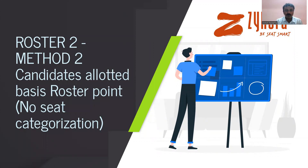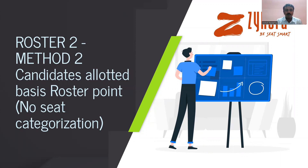In the second part of the video, we looked at one of the methods of implementation based on a roster point allocation, where seats are bucketed into different categories in the seat matrix and then allocation happens from rank one, rank two, on a sequential basis. This is usually followed in MCC. And in this video, we'll be looking at method two based on the same roster point allocation, taking the same 200 roster points as an example, like in method one.